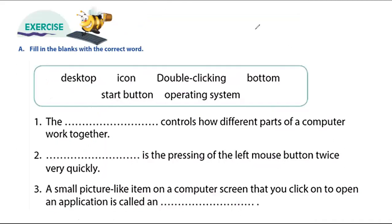Here is a simple exercise — fill in the blanks. We have questions from one to six with words to choose from. Question one: the blank controls how different parts of a computer work together. What program makes the different parts work together? We use the operating system — this is the program that controls the parts of the computer such as monitor, keyboard, mouse, and so on.